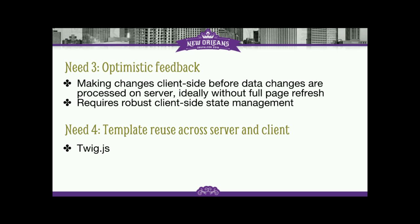A third thing we talked about was the idea of optimistic feedback, because any time you have an interruption in a user's workflow, what ends up happening is that user loses concentration. For example, when you have a spinner that's on for a very long time, oftentimes the user can lose track of what they were doing. Optimistic feedback involves showing state changes without having to make a full round trip to the server because of that latency. That requires a robust client-side rendering and client-side state management layer.